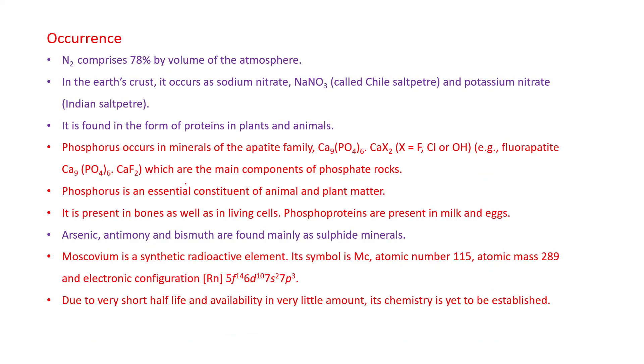Now see occurrence. Nitrogen comprises 78% by volume of the atmosphere. In the earth's crust it occurs as sodium nitrate NaNO3, called Chile saltpeter, and potassium nitrate, called Indian saltpeter. It is found in the form of proteins in plants and animals.